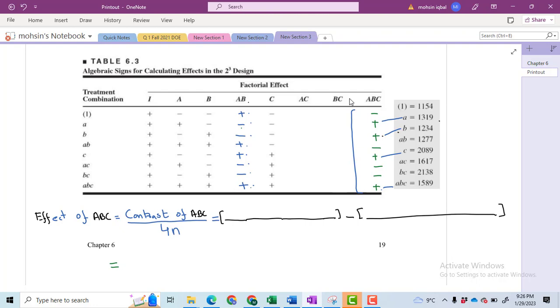So first of all, write these values: A plus B plus C, then plus ABC, and rest of the four values—AB, AC, and BC—these are with the negative sign. So write the negative sign there in the middle.